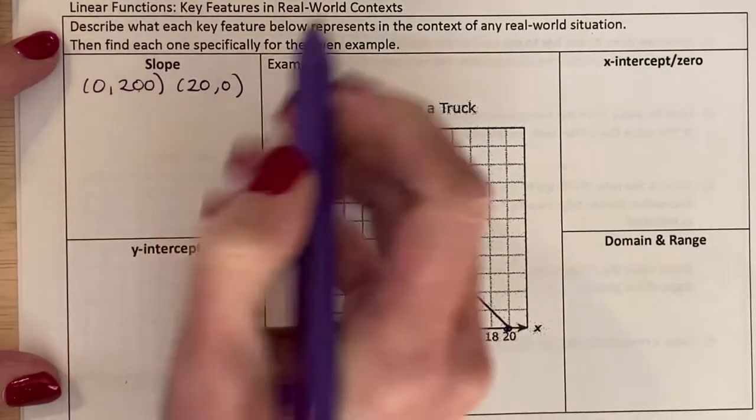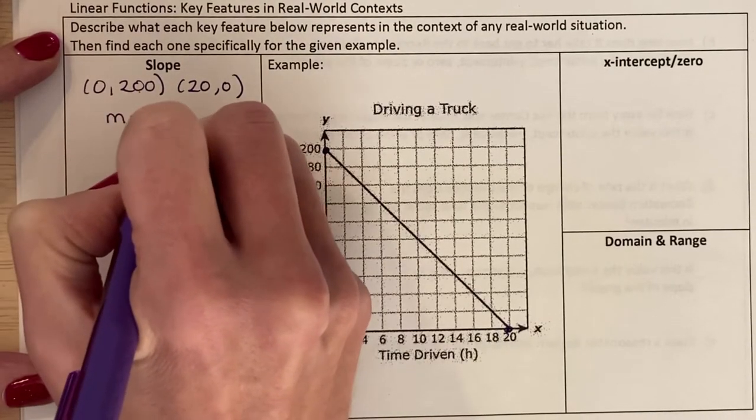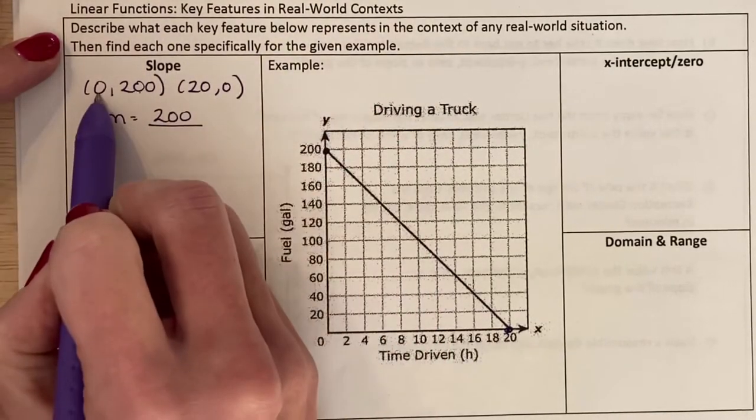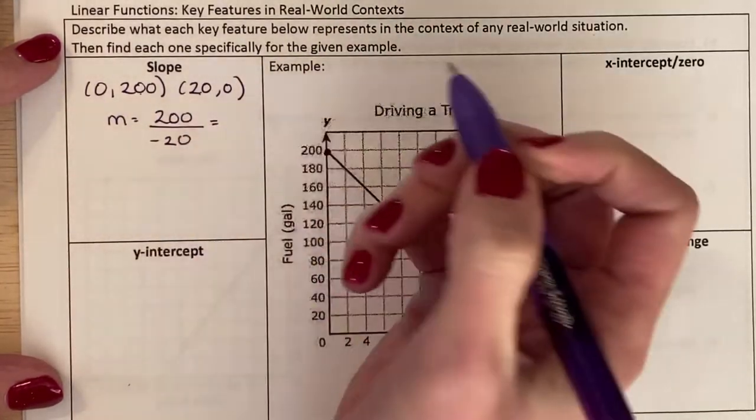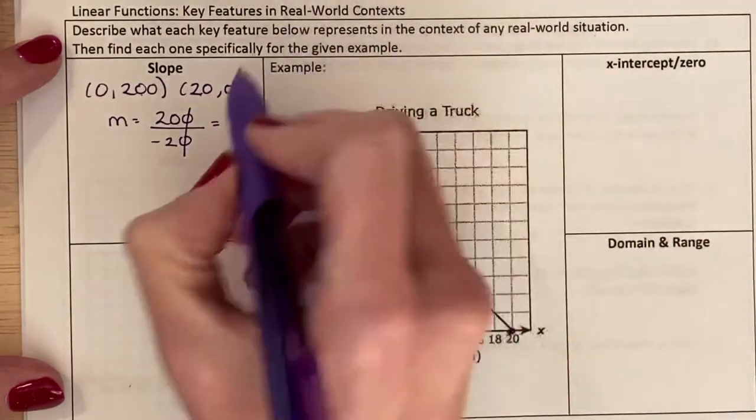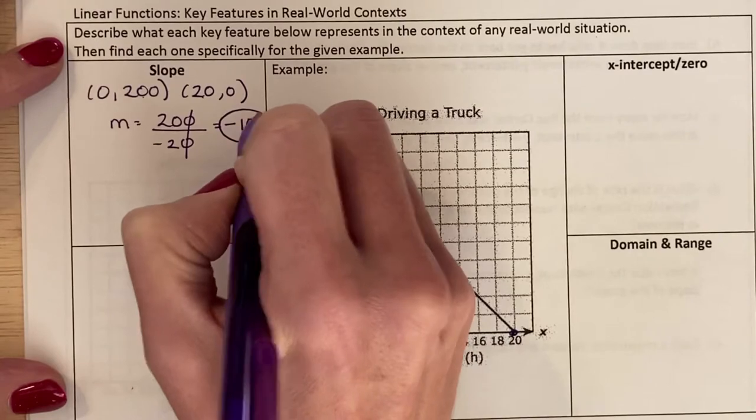y2 minus y1, 200 minus 0 is 200. And then x2 minus x1, 0 minus 20 is negative 20. When I simplify, I get negative 10. So my slope is negative 10.